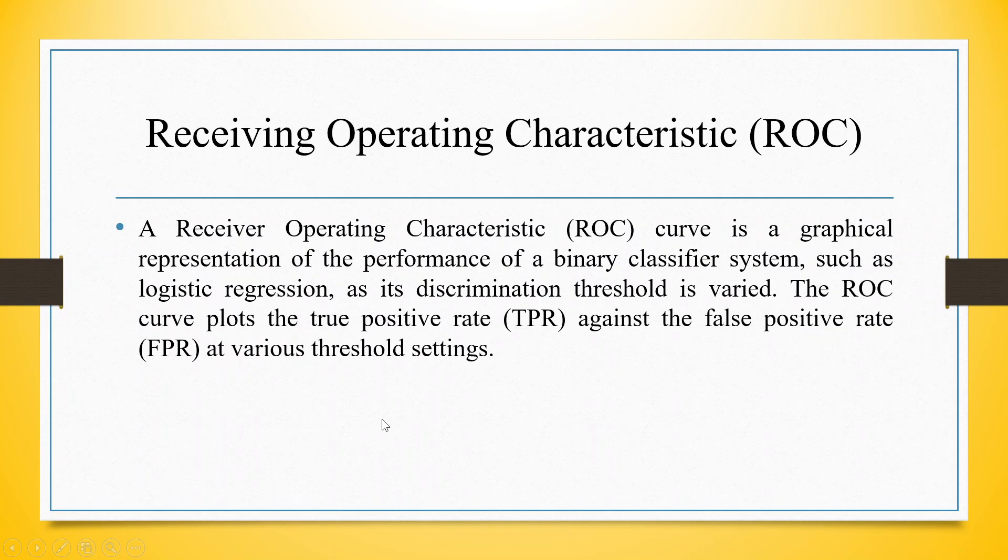A Receiver Operating Characteristic is a graphical representation of the performance of a binary classifier system, such as logistic regression, support vector machine, naive Bayes, as its discrimination threshold is varied. The ROC curve plots the true positive rate against the false positive rate at various threshold settings.